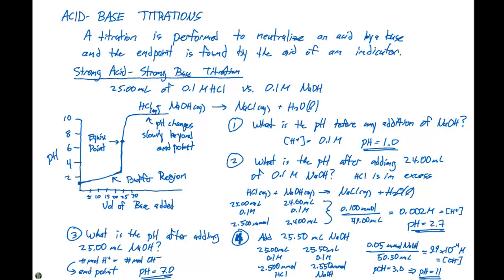We can point out several regions in this curve: first, the pH before we add any base; second, the pH after adding almost enough base to reach the endpoint; third, the pH at the endpoint; and fourth, just after we add excess base. During a titration, we're always going to add the base to the acid. This gives you a general overview of acid-base titrations with a strong acid and strong base. In the next video, we'll cover what happens when we add a weak acid to a strong base.